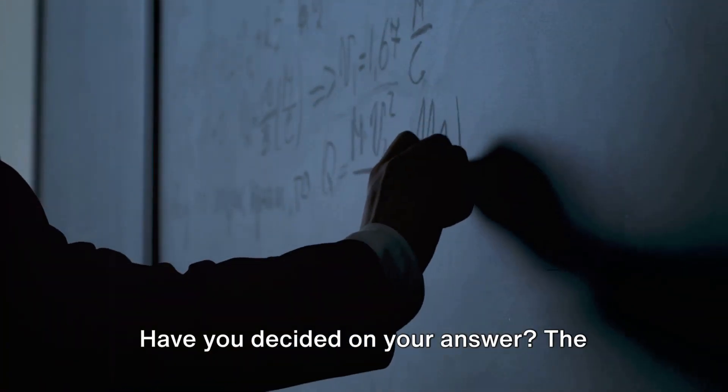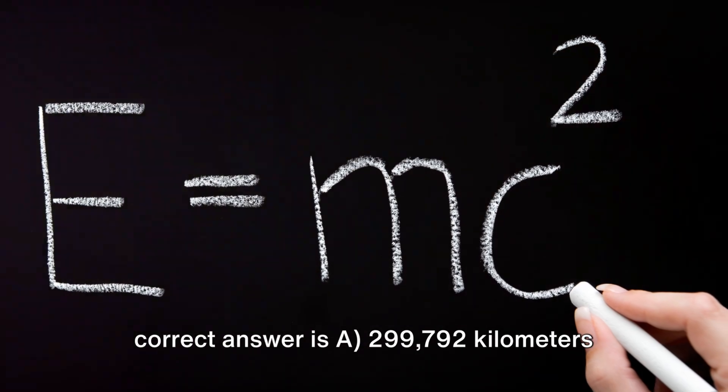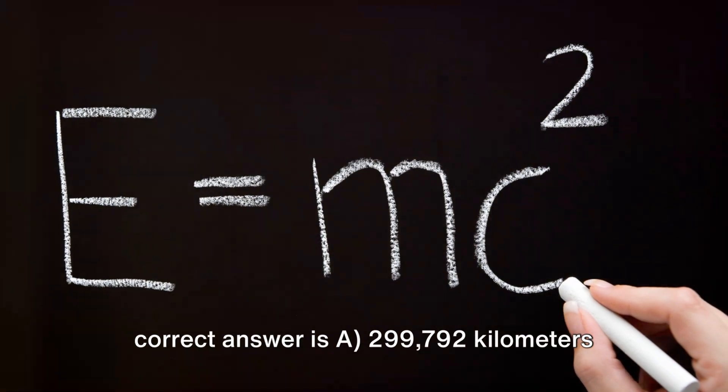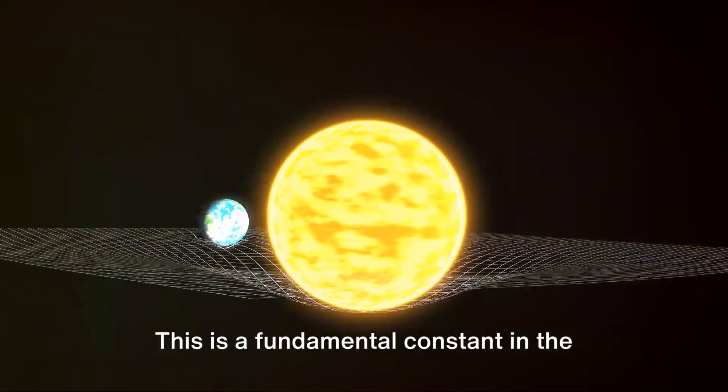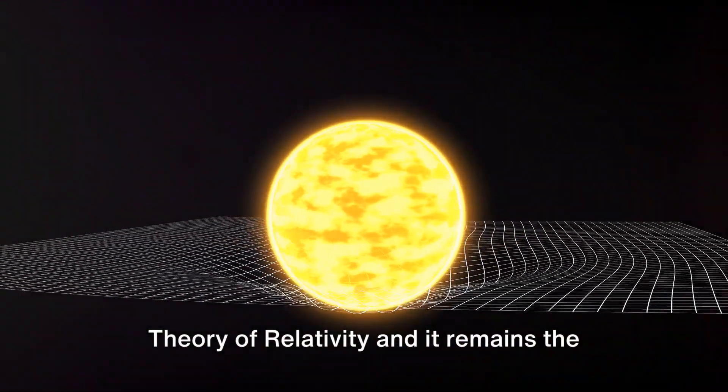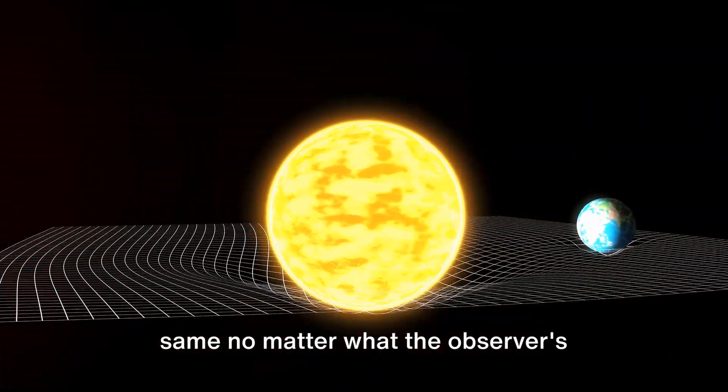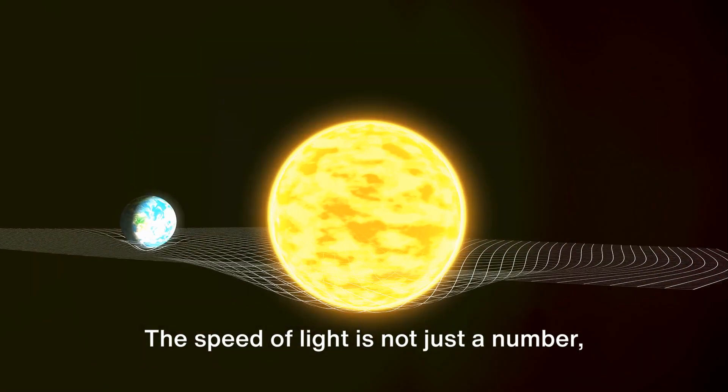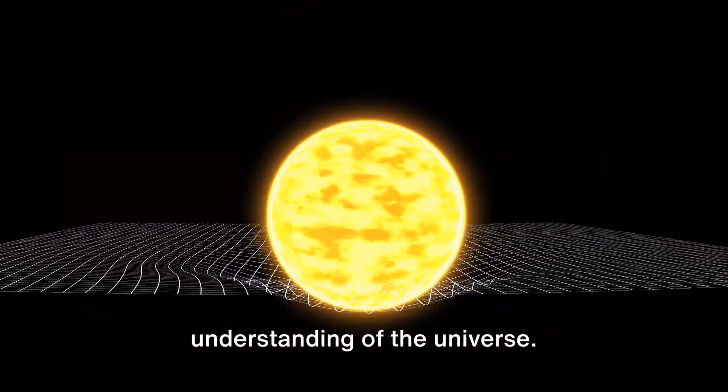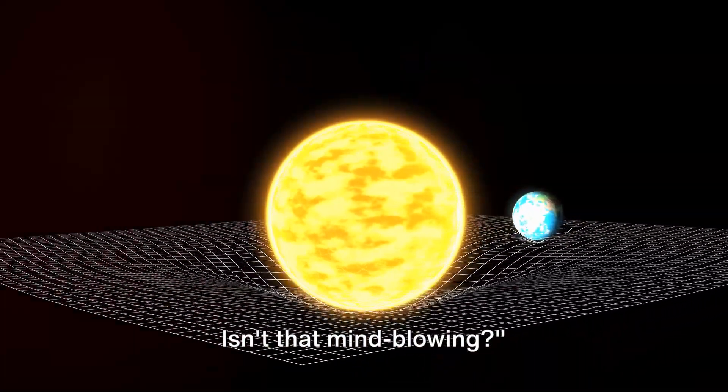Take a moment to think about it. Have you decided on your answer? The correct answer is A, 299,792 kilometers per second. This is a fundamental constant in the theory of relativity, and it remains the same no matter what the observer's relative motion or position. The speed of light is not just a number but a fundamental part of our understanding of the universe. Isn't that mind-blowing?